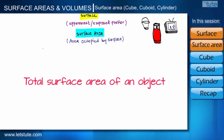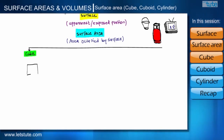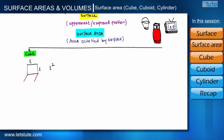Let us start with the cube. First of all, we will see what shape we call a cube. As we all know, the area of a square with side L is L squared. Now suppose we want to make a box using such square sheets, each having area L squared. This is our base, which has four sides, and we are going to create walls on these four sides.